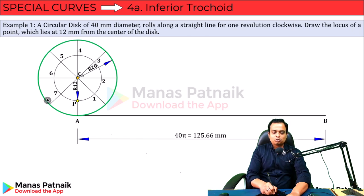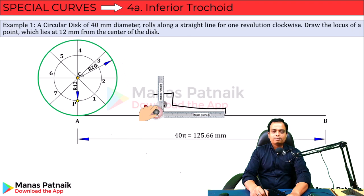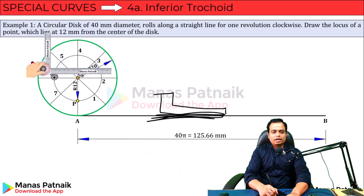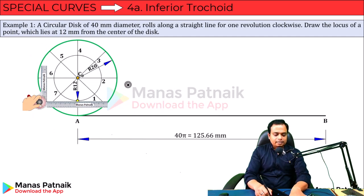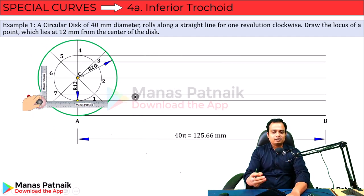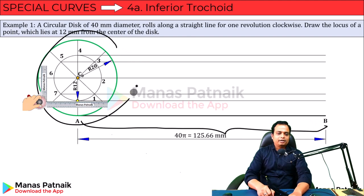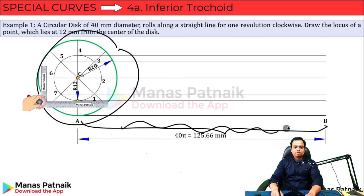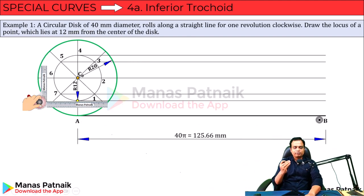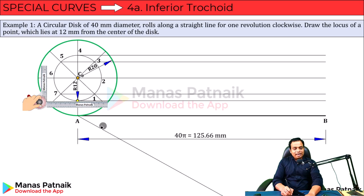Start the marking — this is the very point we need to track: 1, 2, 3, 4, and so on. Keep your mini drafter absolutely horizontal and create horizontal lines through points 1, 2, 3, 4, 5, 6, 7, and P. Now divide this straight line into eight equal parts, corresponding to the eight equal parts of the circle.